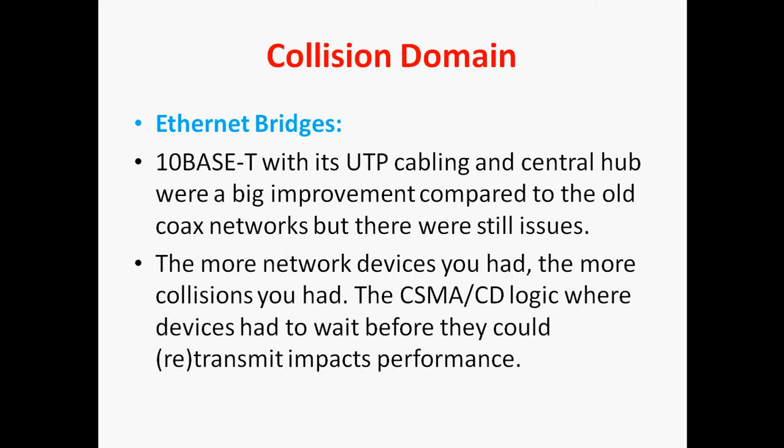Next, Ethernet bridge. 10Base-T with its UTP cabling and central hub was a big improvement compared to the coaxial network. But there was still the issue of collision. The more network devices you add, the more collisions you get. The CSMA/CD logic required devices to wait before they could transmit or retransmit.